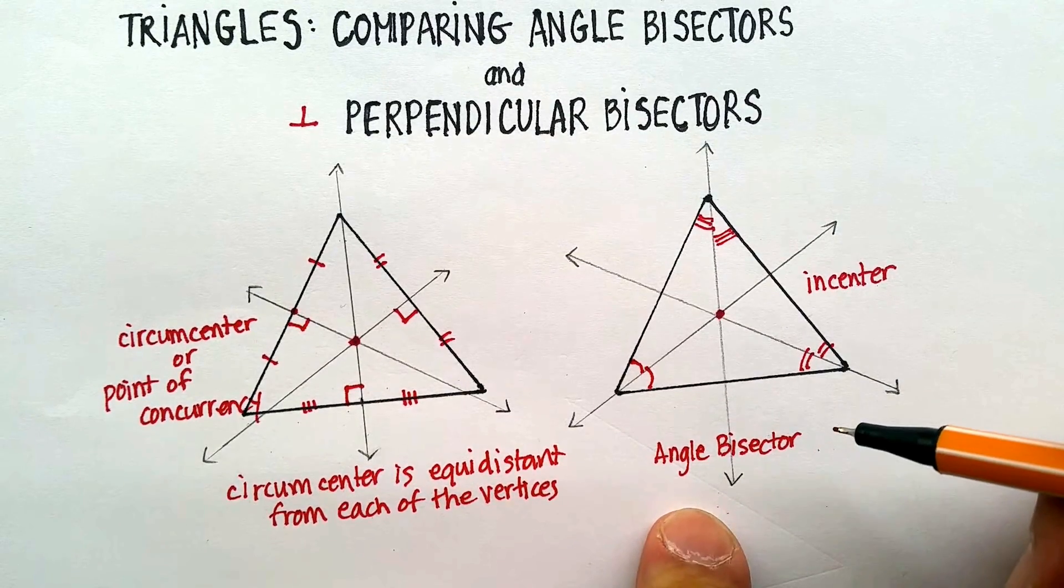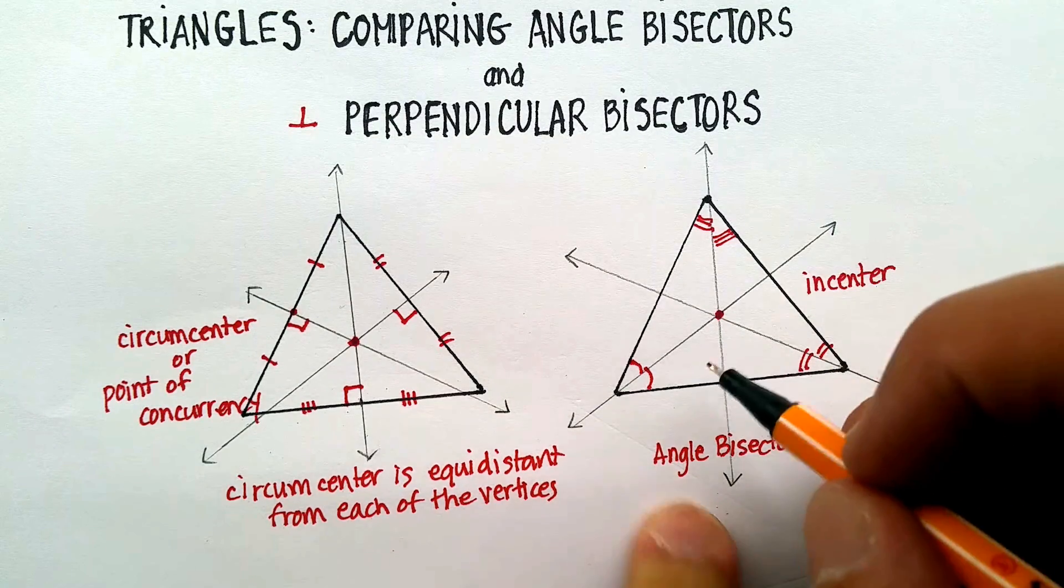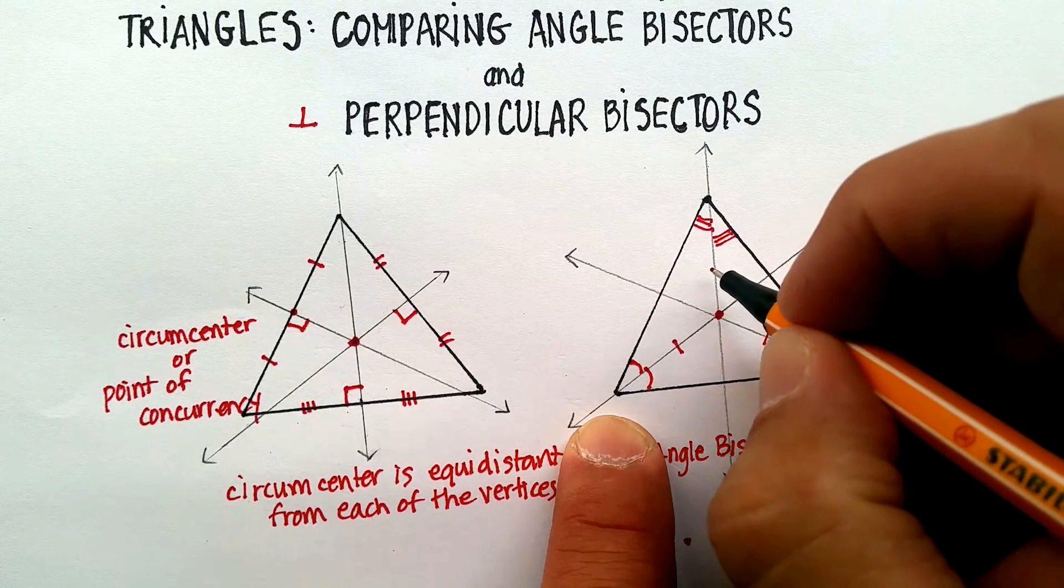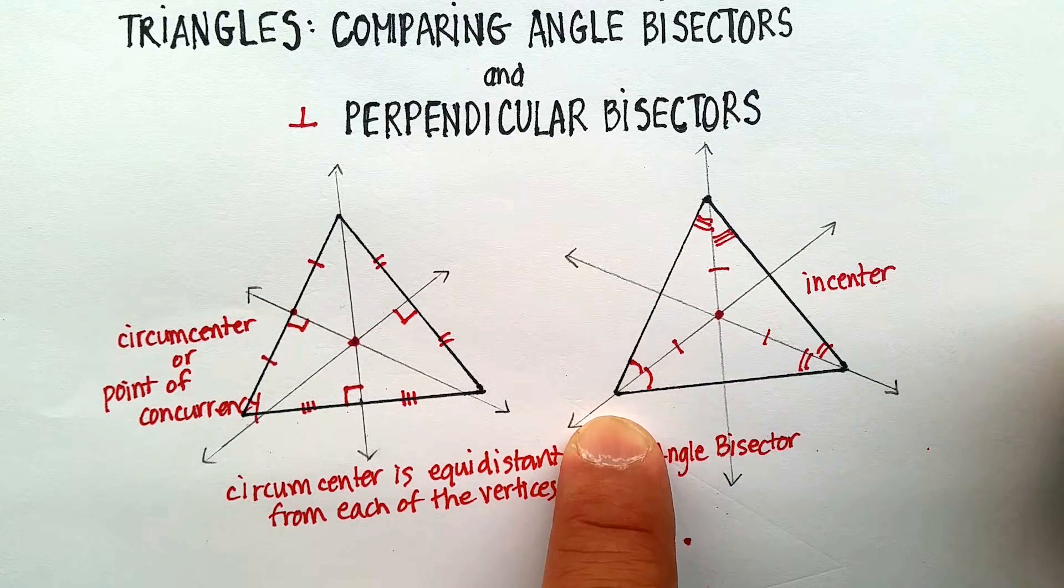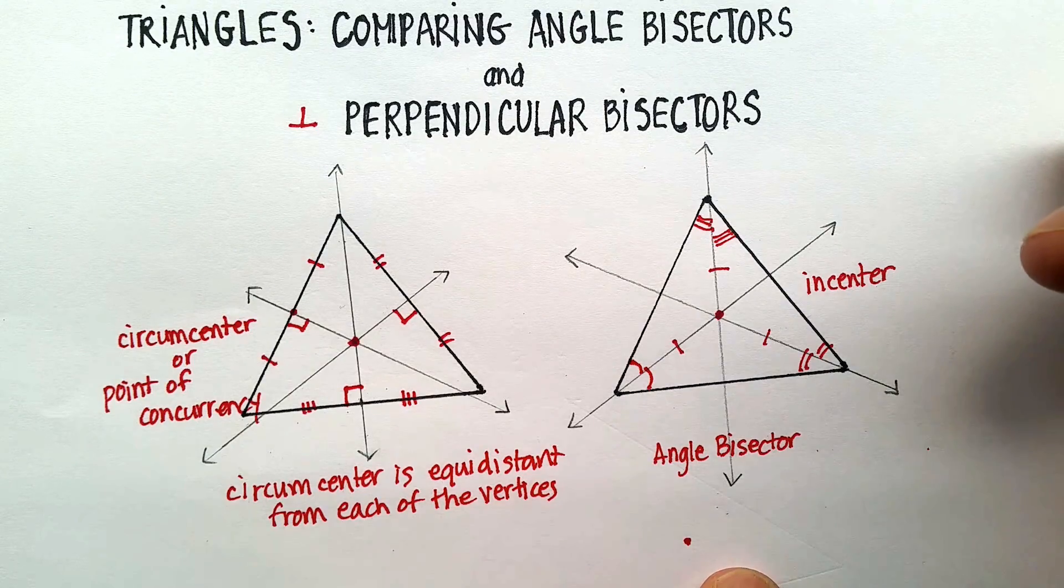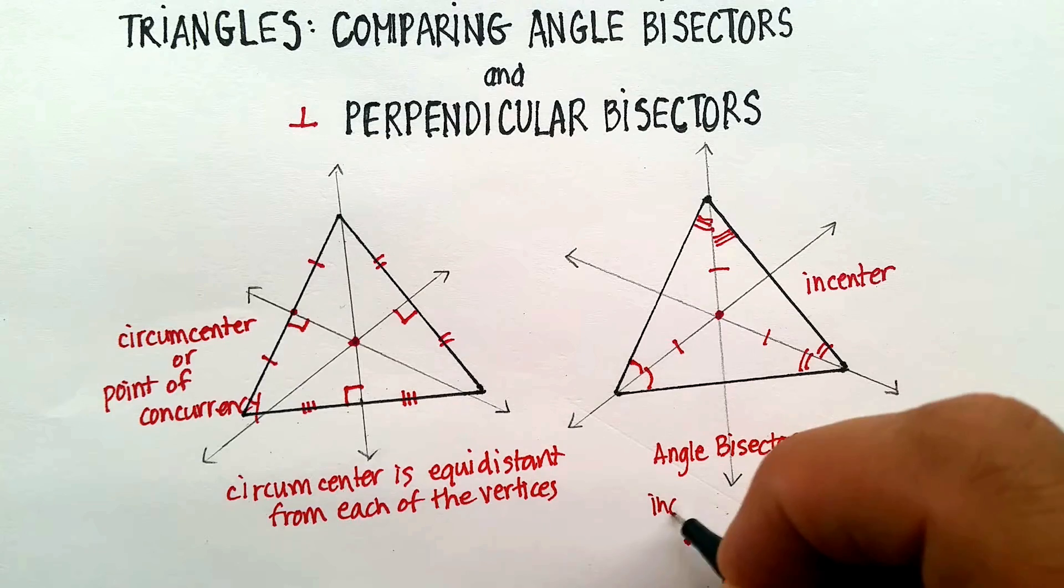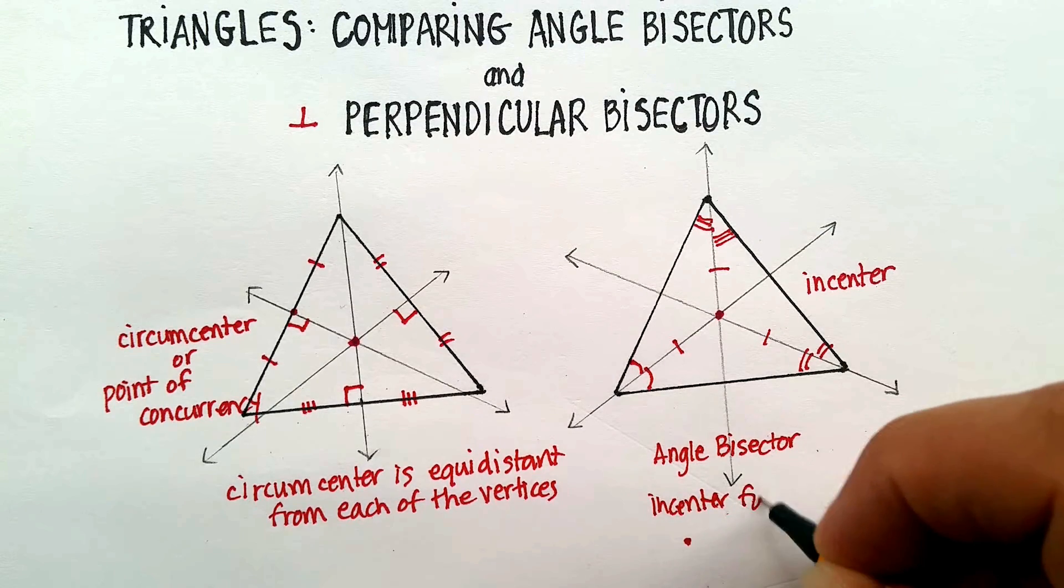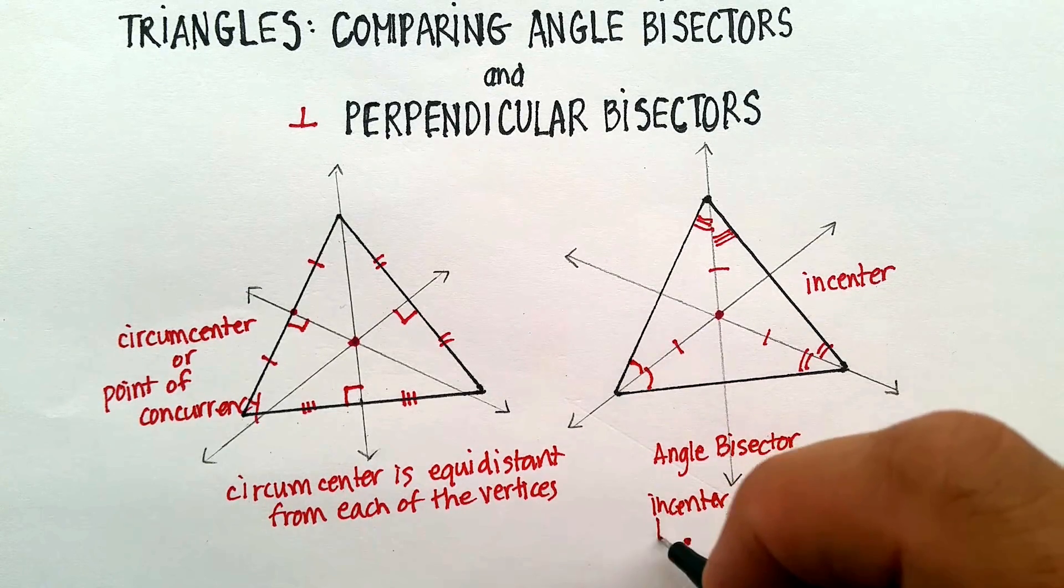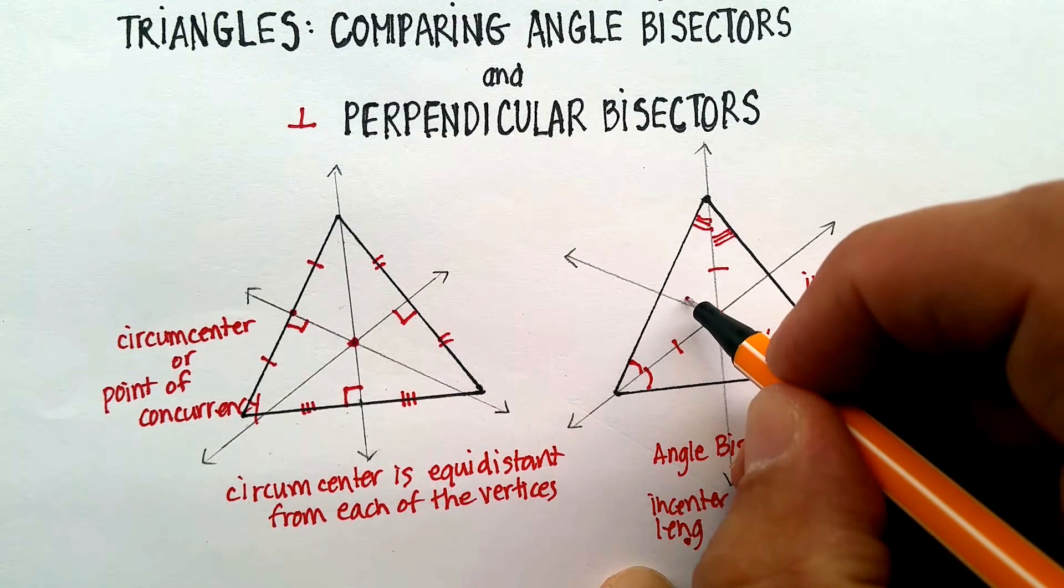Now, with the angle bisector, the in-center actually just forms equal lengths from each of the vertices. It's basically the same idea. Form equal lengths from each of the vertices. Oh, I didn't, not from the vertices, excuse me. Equal lengths from the side.